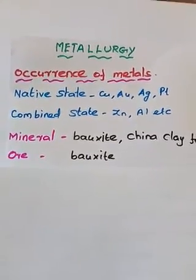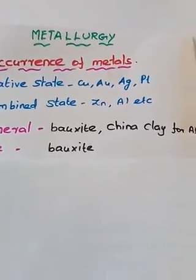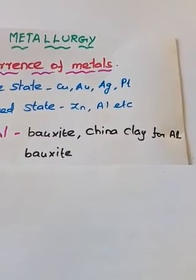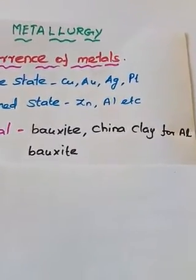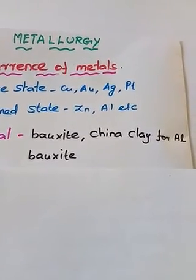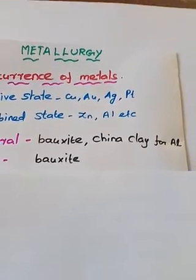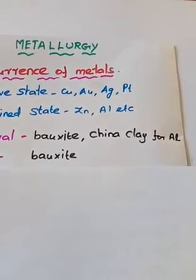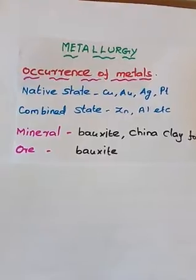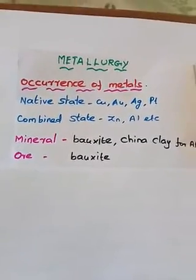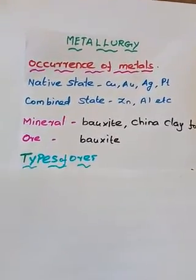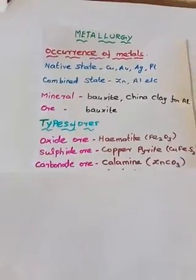A mineral becomes an ore when it gives a greater amount of metal. Among the minerals of aluminium — bauxite and china clay — bauxite gives more aluminium than china clay, so bauxite acts as an ore. An ore is the mineral that yields the greatest amount of metal.